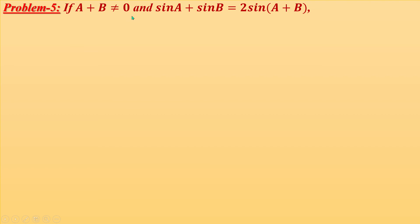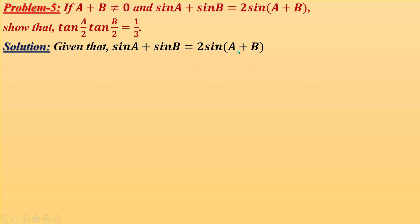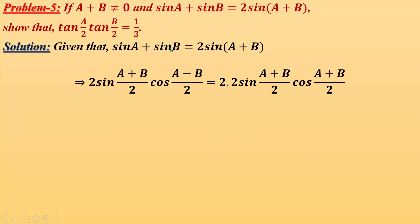Problem 5: If A + B ≠ 0 and sinA + sinB = 2sin(A+B), show that tan(A/2)·tan(B/2) = 1/3. Solution: Applying the formula sinC + sinD = 2sin((C+D)/2)cos((C-D)/2), the left side becomes 2sin((A+B)/2)cos((A-B)/2). The right side 2sin(A+B) = 2·2sin((A+B)/2)cos((A+B)/2) using sin2A = 2sinA cosA.